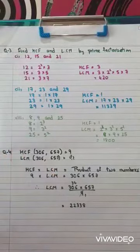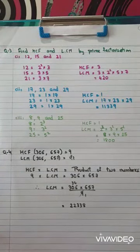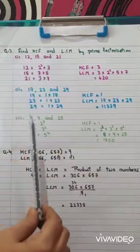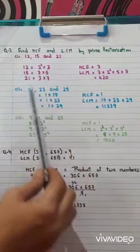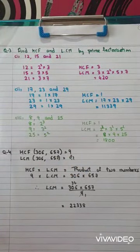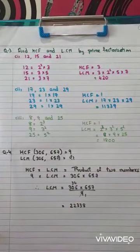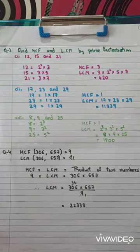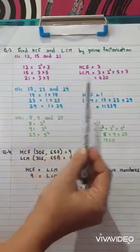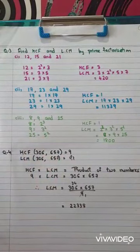Question number 3: Find HCF and LCM by prime factorization method for three numbers: 12, 15 and 21. Factors of 12: 2 squared into 3. Factors of 15: 3 into 5. Factors of 21: 3 into 7. Common factor is 3, so HCF equals 3. For LCM, take 3 and the remaining factors 2 squared, 5 and 7: 2 squared into 3 into 5 into 7 equals 420. So LCM is 420.